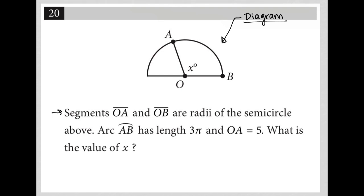The question says segments OA and OB are radii of the semicircle above. So that just means that they are equal, right? They're both radii. It must be the exact same length.